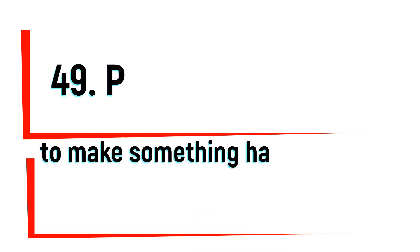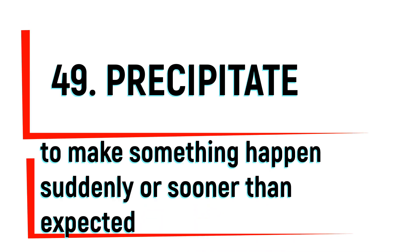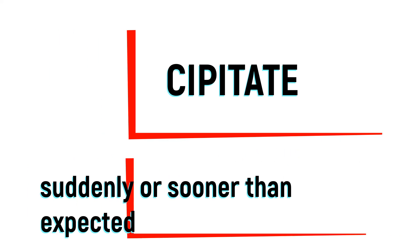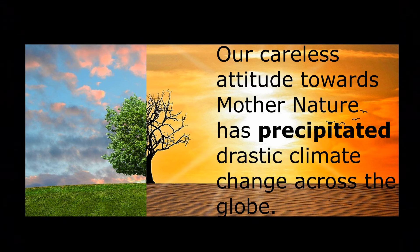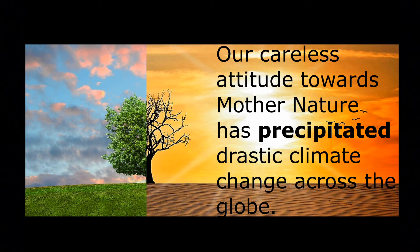Next, precipitate — to make something happen suddenly and sooner than expected. Kisi cheez ko anapekhshit shigrata ke saath karna. For example, our careless attitude towards mother nature has precipitated drastic climate change across the globe. Hamaari laaparvaa ravaiye ke wajah se poori duniya mein jalvayu parivartan aur bhi shigrata ke saath ho raha hai.